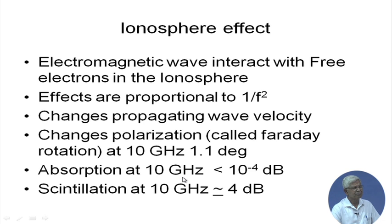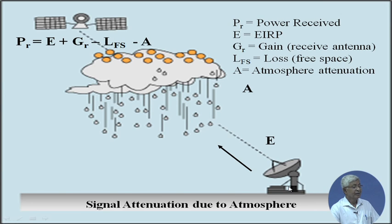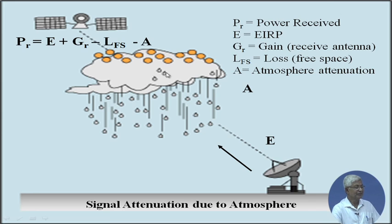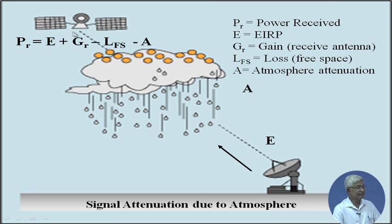In general, the ionospheric effect at 10 GHz is very very low and we can neglect it for the time being, though it comes into picture for detailed calculation. Now let us see what happens in the troposphere. Here is a sketch showing a satellite, clouds, rain formation, and precipitation.